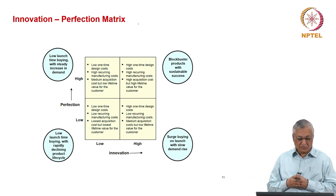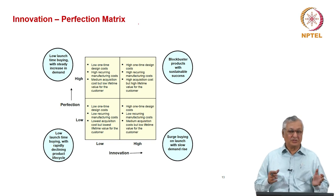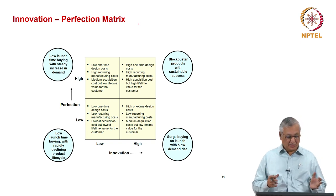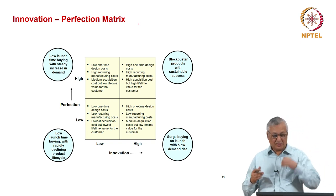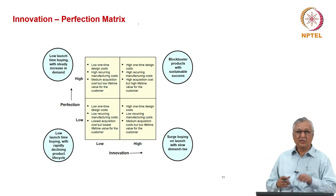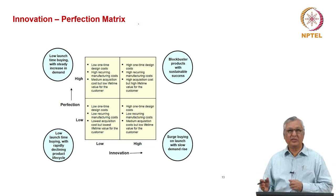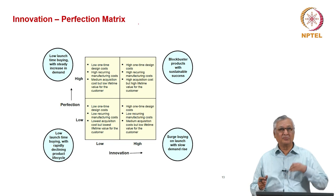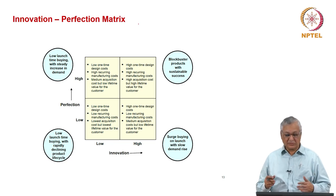So, what would the customer do? There is low launch-time buying and a rapidly declining product life cycle. Now, you can look at a variant for this where the innovation level is very high, but the perfection level is not so high.